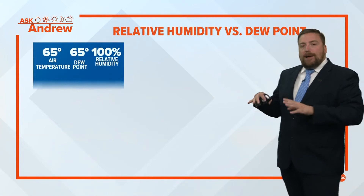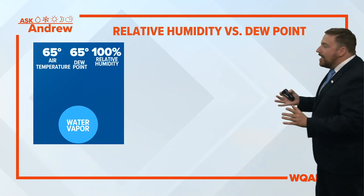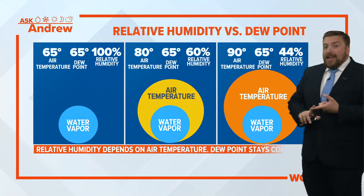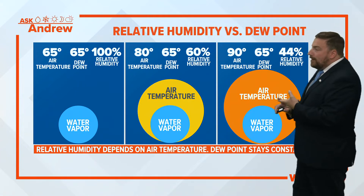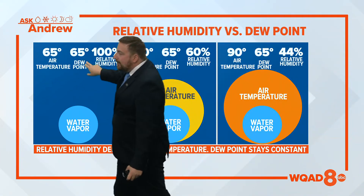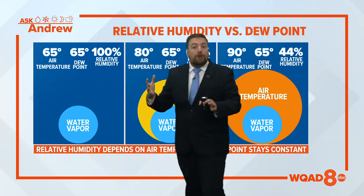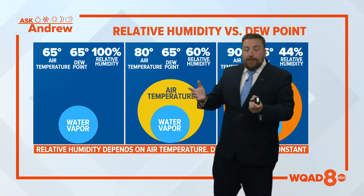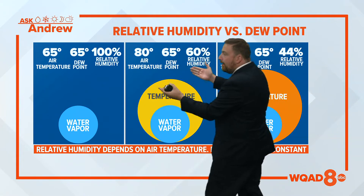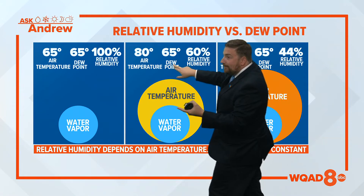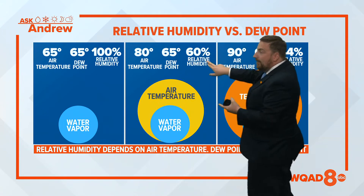It's a great question. When we talk about humidity, that number is based off of two things: the actual temperature of the air and the dew point temperature. So when both of those are the same — as in this example here — you have 100% relative humidity. The closer they are, the higher the humidity.